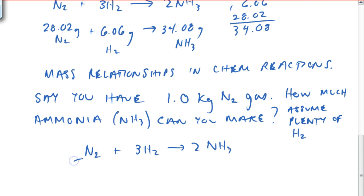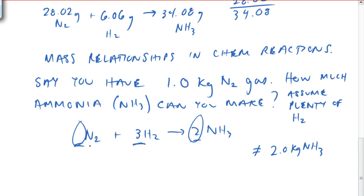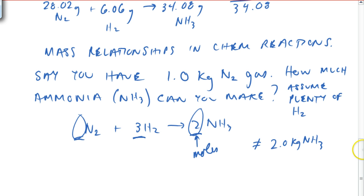Now remember, these numbers here—one, three, and two—are mole ratios. So we have mole ratios, but what they are not is mass ratios. So in other words, we can't just say that if we have one kilogram of nitrogen, we're going to get two kilograms of ammonia. So the answer is not two kilograms of ammonia because these numbers do not represent masses. They represent molecules or moles, so the coefficients are moles, not masses.